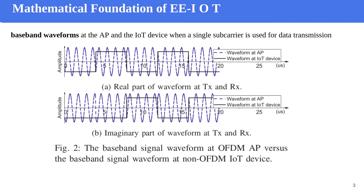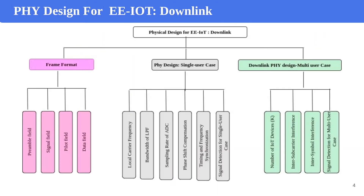In the mathematical foundation section, the authors provided formulations for baseband waveform, radio signals, and so forth. If you are interested in this mathematical part, you can take a look at the papers. In this paper, a practical physical design is provided to enable downlink data transmission from an OFDM-based broadband access point to multiple narrowband IoT devices. They first presented a frame format for data transmission, then a physical design for a single-user case, and then extended it to the multi-user case. The frame format consists of a preamble field used for synchronization and channel estimation, a signal field, a pilot field, and a data field.